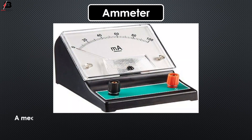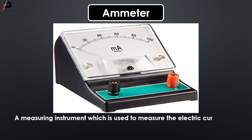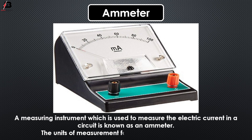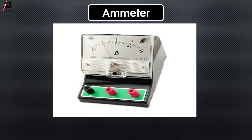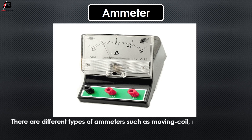Ammeter: A measuring instrument which is used to measure the electric current in a circuit is known as an ammeter. The unit of measurement for electric current is ampere. There are different types of ammeter such as moving coil, moving magnet, and iron types.